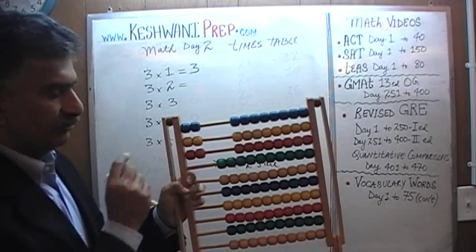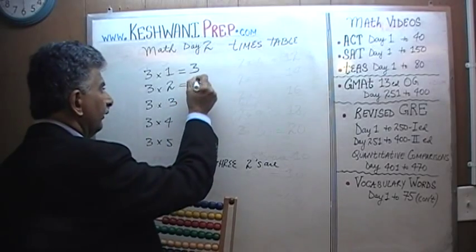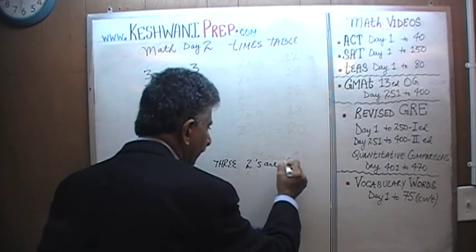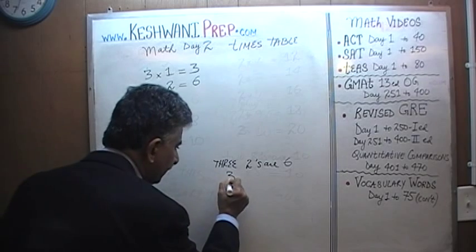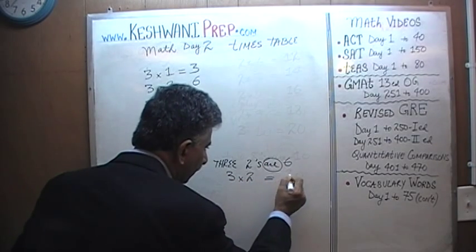Let's find out. 1, 2, 3, 4, 5, 6. Looks like 3 2's are 6. 3 2's are 6. This is how we write it. 3 2's are, R means equal. Equal 6.